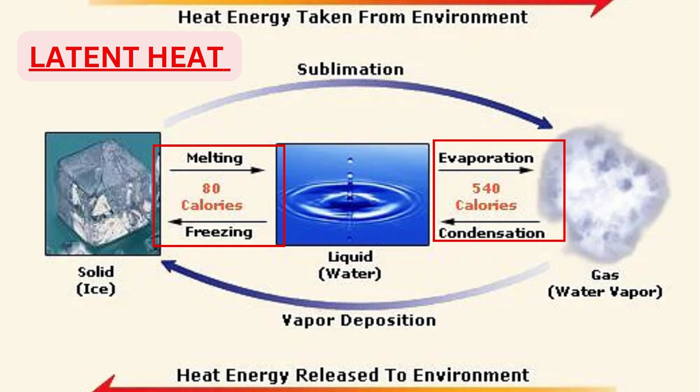The latent heat required to melt solid water — that is ice — into liquid water at 0 degrees centigrade is 80 calories per gram. When liquid water gets converted to ice, as happens in your refrigerator, it releases 80 calories of heat per gram of water. This released heat goes into the atmosphere through the backside of your fridge, which is why the backside of the fridge kept in our home feels quite warm and hot.